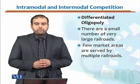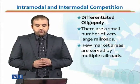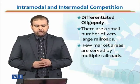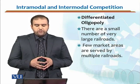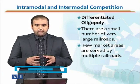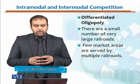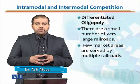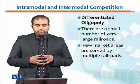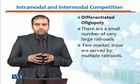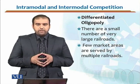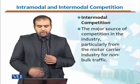Let us look at the market structure for railroads. We could have intramodal and intermodal competition. In the railroad industry, you could have a differentiated oligopoly — a small number of large railroads where fewer market areas are served by multiple railroads. You have a few market areas specified and multiple railroads to actually serve them, so you are talking about a differentiated oligopoly.